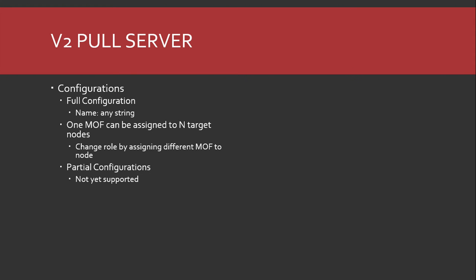An interesting scenario was raised: having individual MOFs for IIS and SQL on the pull server, then saying this server gets this one and this one, and it puts them together as the client asks. That's not currently planned. Regarding WMF4 clients on a WMF5 pull server — yes, it's backwards compatible. It's not going to use the new stuff, it'll still use the old way, but it can talk to the V2 pull server.